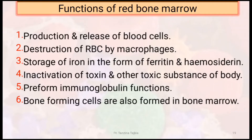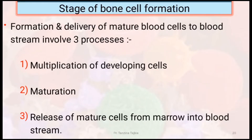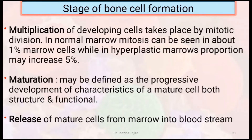Functions of the red bone marrow: production and release of blood cells; destruction of RBCs by macrophages; storage of iron in the form of ferritin and haemosiderin; inactivation of toxins and other toxic substances in our body; it performs immunoglobulin functions; and bone-forming cells are also formed in the bone marrow. Stages of bone cell formation — there are three processes: multiplication, maturation, and release. Multiplication of developing cells takes place by mitotic division. In normal marrow, mitosis can be seen in about 1% of marrow cells, while in hyperplastic marrow the proportion may increase to 5%. Maturation is defined as the progressive development of characteristics of mature cells, both structural and functional. Then, release of mature cells from the marrow into the blood stream.